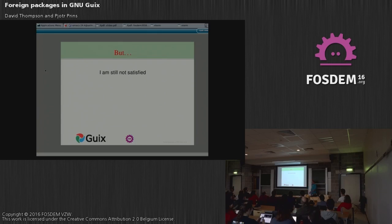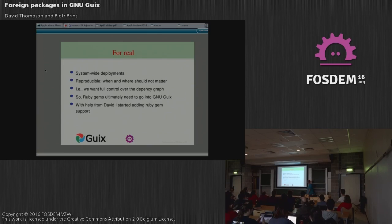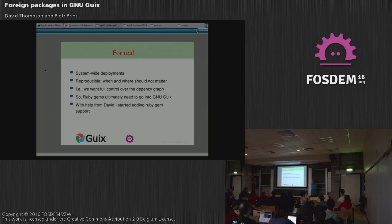But I'm not happy. Why? Because I've got two hats — I'm a programmer, but also a system administrator. In the real world we need system-wide deployments, and they need to be reproducible also. We want full control of the dependency graph, because with the gem home approach I don't have full control. If I install two gems after each other under the same GEM_HOME, what happens — the order of installing gems also matters.